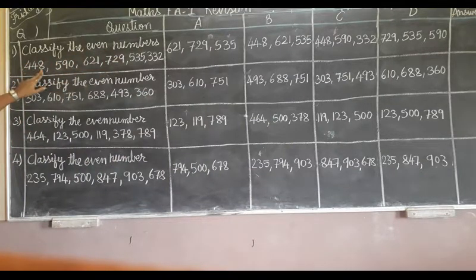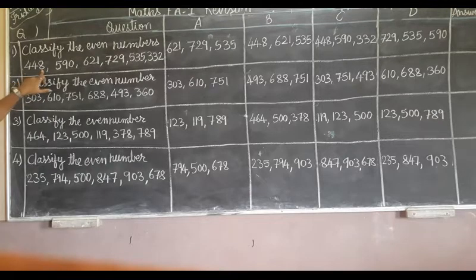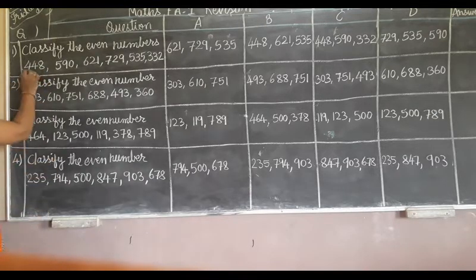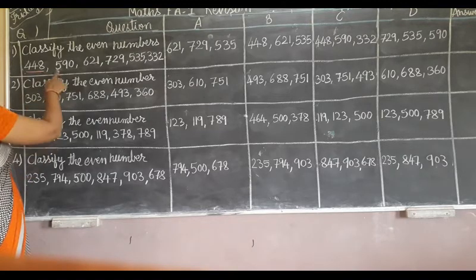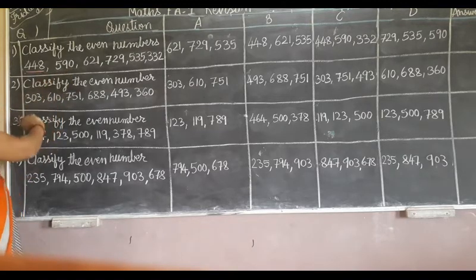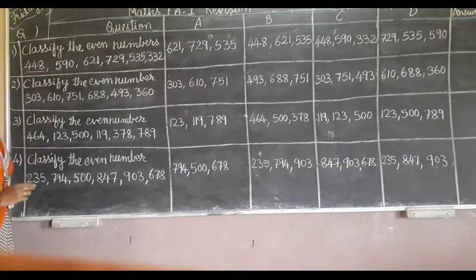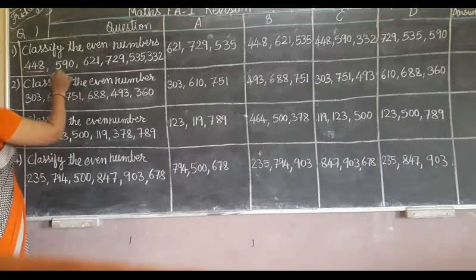448 — is it odd or even? 8 means even number. You have to underline it. Next, 590 — 0 is an even number.